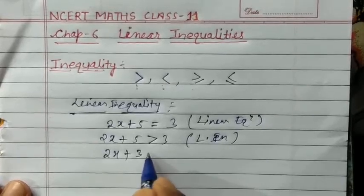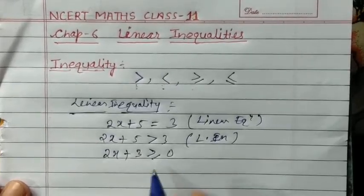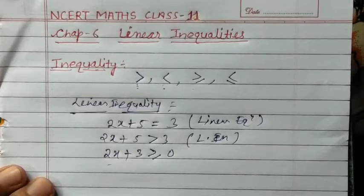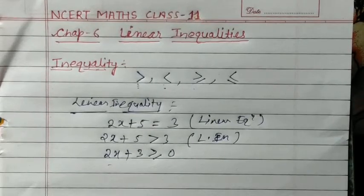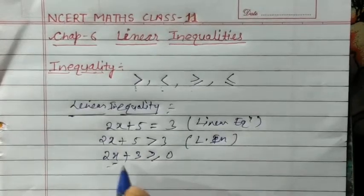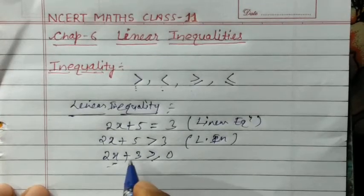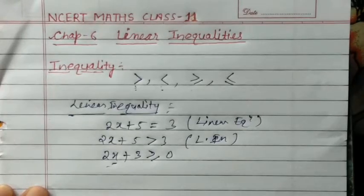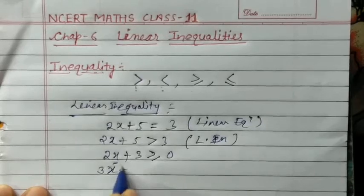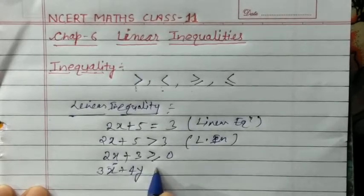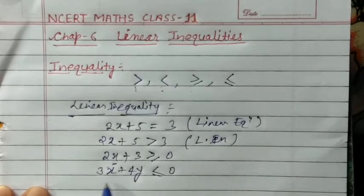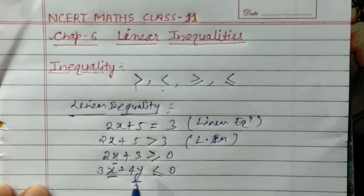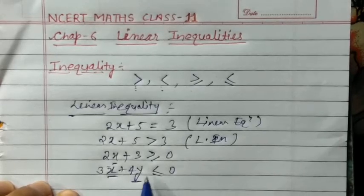For example, 2x + 3 ≥ 0 — if we use such an inequality symbol, then this is a Linear Inequality. There are many types of Linear Inequality. In this example there is only one variable, x. So this is a Linear Inequality in one variable. If we write another inequality like 3x + 4y ≤ 0, this is again a Linear Inequality, but it has two variables, x and y. So this is called a Linear Inequality in two variables.